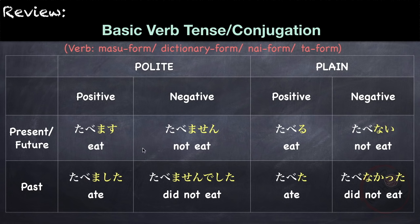For example, tabemasen, meaning not eat. For the positive past, we use mashita. So the past of masu is mashita. For example, tabemashita. And for the negative past, we use masen deshita. So from masen, the past is masen deshita. For example, tabemasen deshita, meaning did not eat.